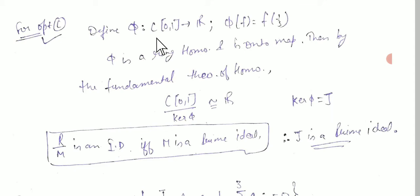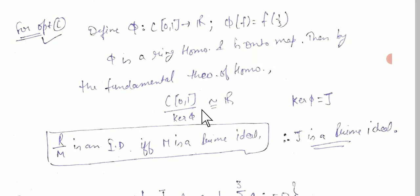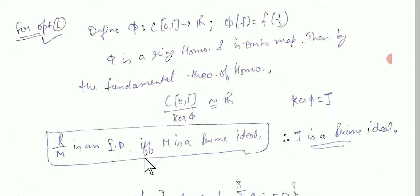We define a homomorphism φ from C[0,1] to a field, and by the fundamental theorem of homomorphisms we can say the quotient R/J is isomorphic. If R/M is a prime ideal and J is a prime ideal, the conclusion follows.